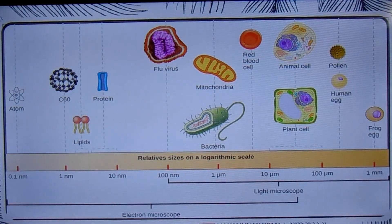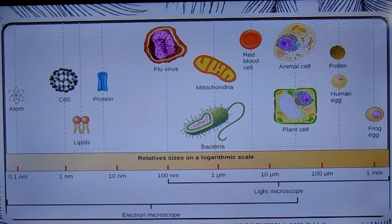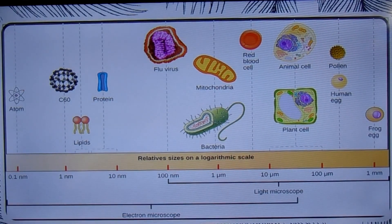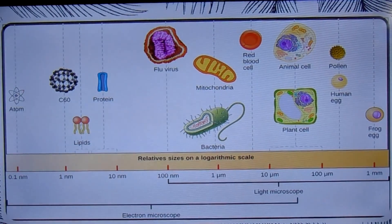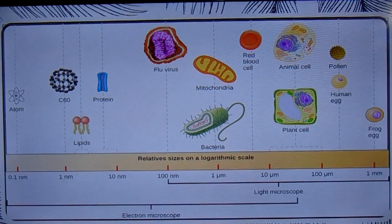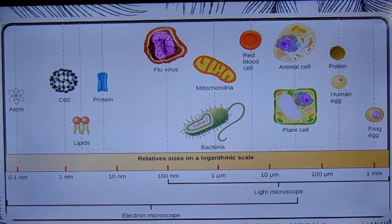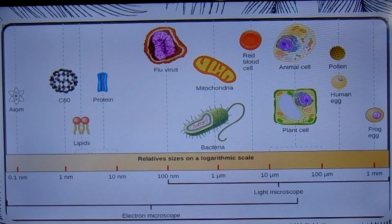Some cells are specialized factories for the production of particular substances such as hormones, starches, and fats. Others are like muscle cells that burn fuel to do mechanical work. Still others are electricity generators, like the modified muscle cells in the electric eel.